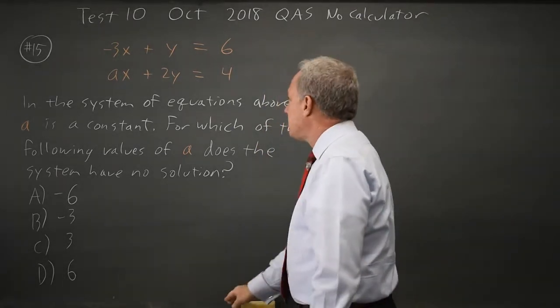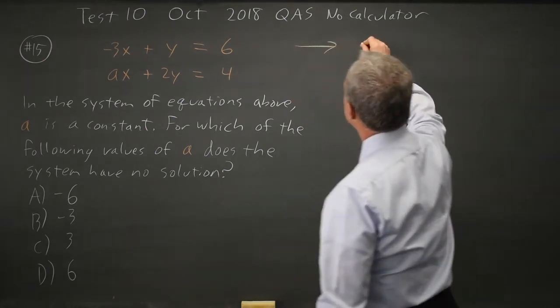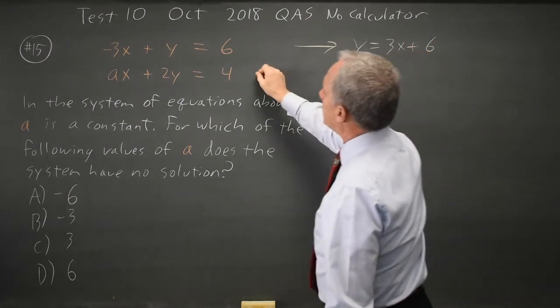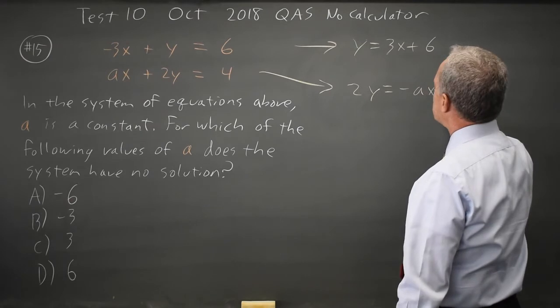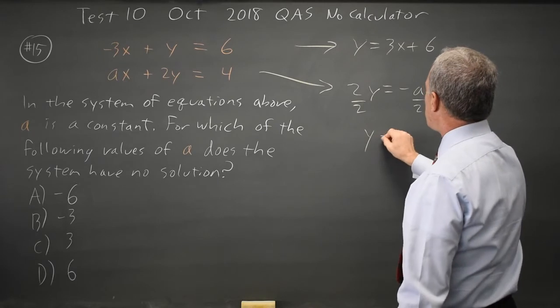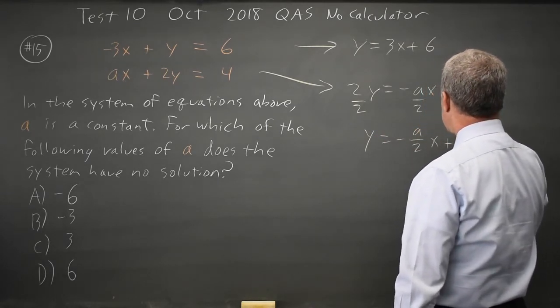There's a faster way once you recognize that, but I'm just going to write the slope. y equals 3x plus 6, and the other one is 2y equals negative ax plus 4. Divide by 2 to get the slope: 1y equals negative a over 2x plus 4 over 2 is 2.